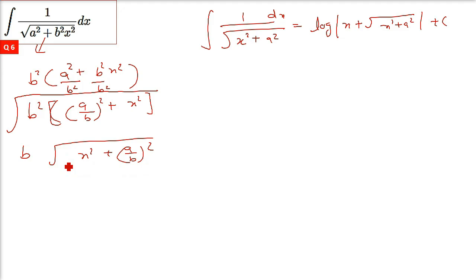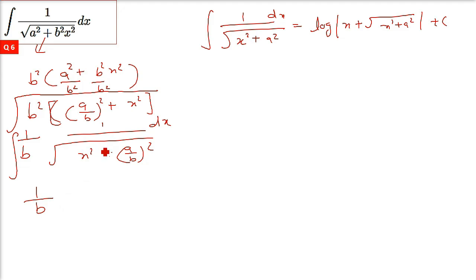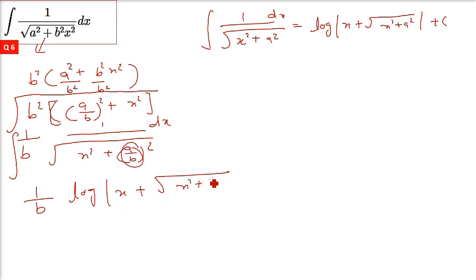We will do the integration now. Remember this was the denominator, so we put 1 here and this will be 1 by b. Now we have the standard result: this under root x square plus a square in the denominator gives log x plus under root x square plus a by b whole square, plus constant of integration.